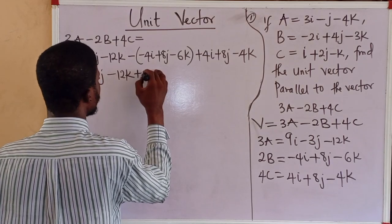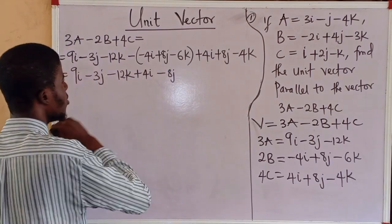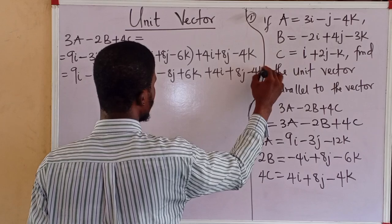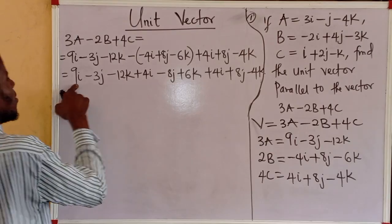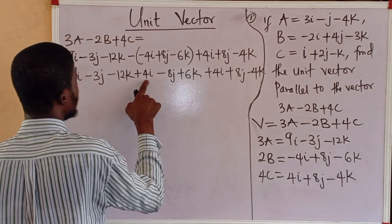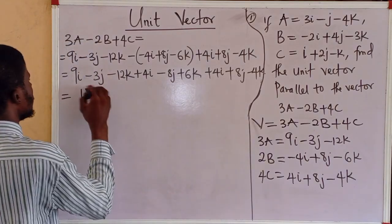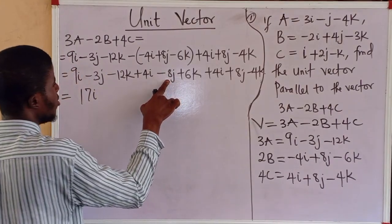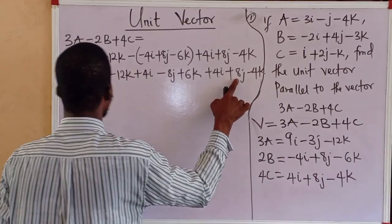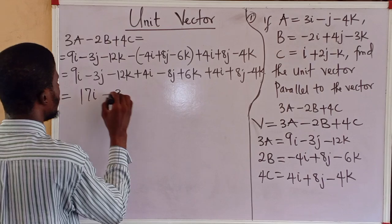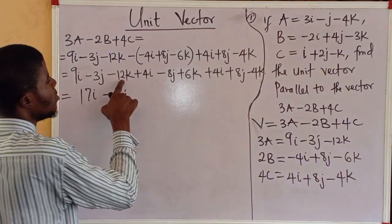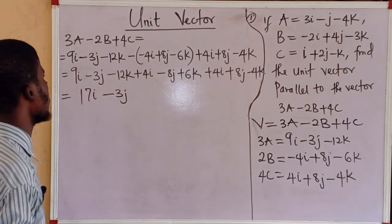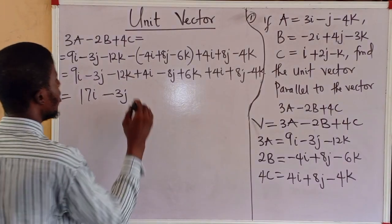Combining all components: for i, we have 9i minus 4i plus 4i, which gives 9 plus 4 is 13, plus 4 is 17i. For j, we have minus 3j plus 8j minus 8j, giving minus 3j. For k, we have minus 12k minus 6k plus... minus 6 plus 4 gives minus 2, and minus 12 minus 2 gives minus 10k. So vector V equals 17i minus 3j minus 10k.